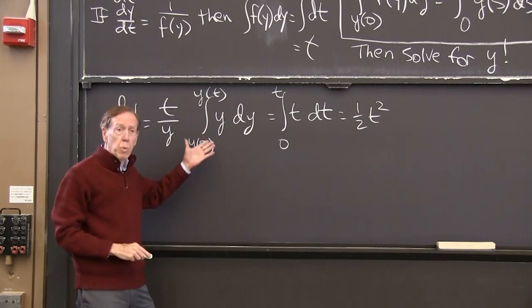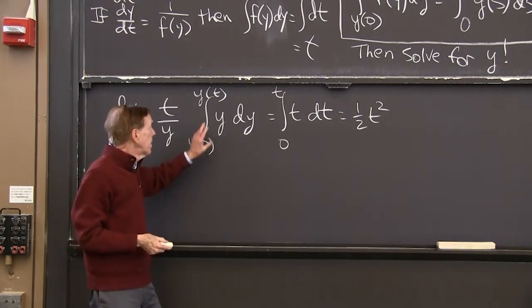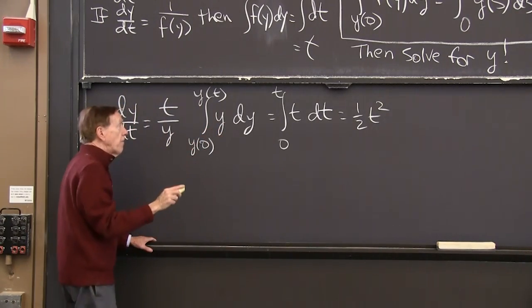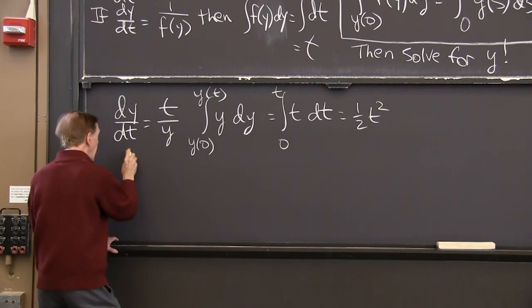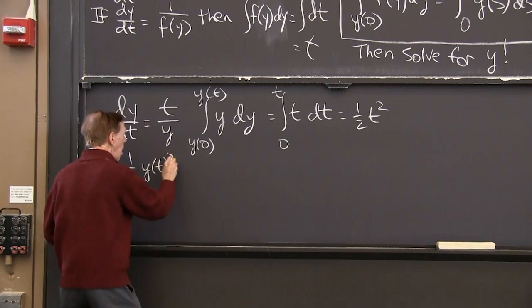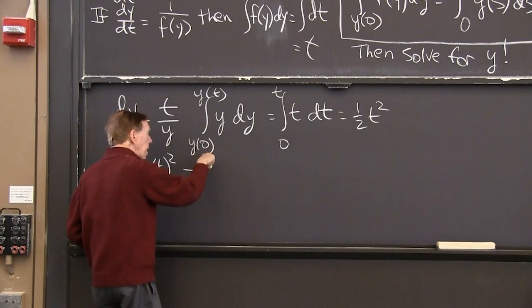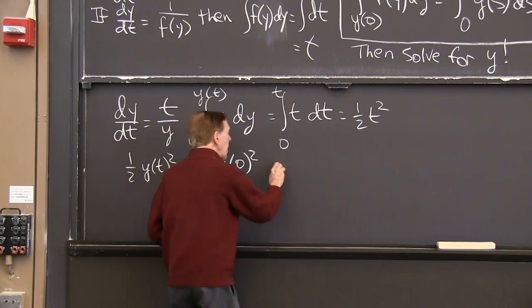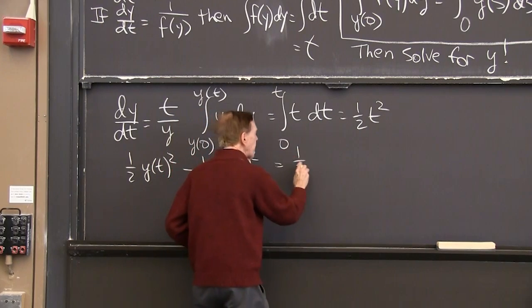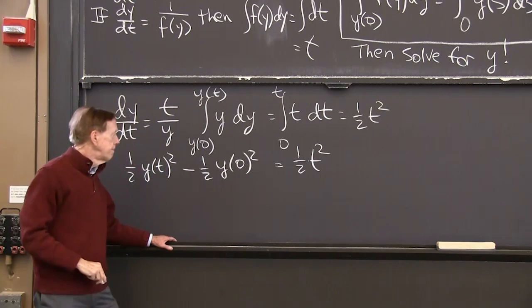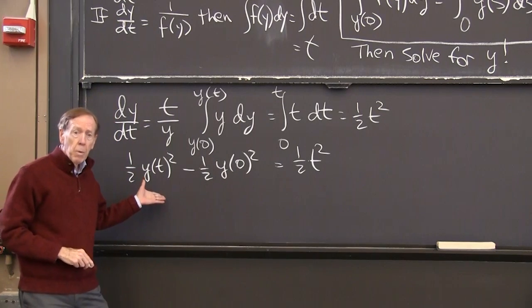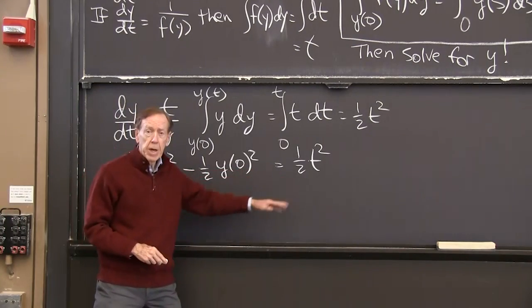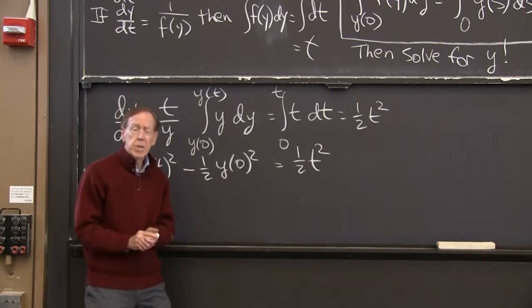And the left hand side is 1 half y squared between these two limits. So I'm getting the integral of that is 1 half y squared. So up top, I have 1 half y of t squared minus, at the bottom end, 1 half y of 0 squared, equaling the right hand side, 1 half t squared. So you see, we got a function of y equal to a function of t. And the equation is solved, really.